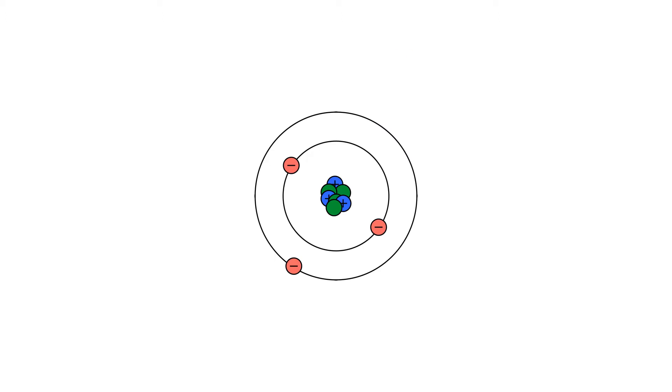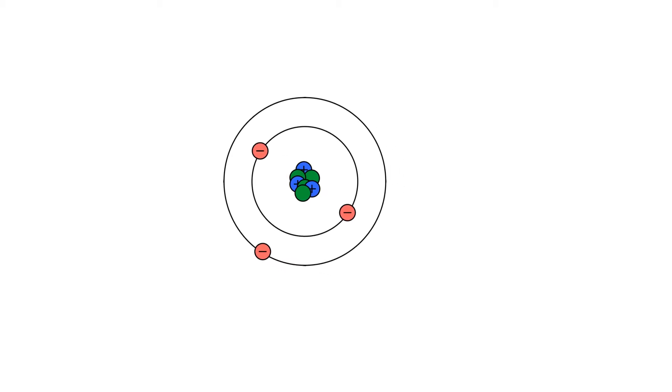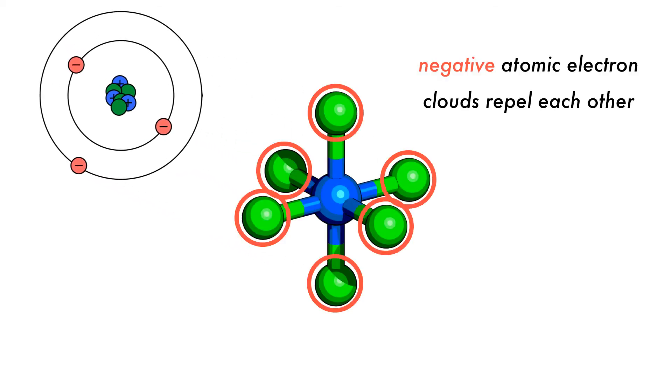From atomic theory, we know that each atom contains a nucleus that is surrounded by an electron cloud. These negatively charged electron clouds repel each other and cause the molecule to adopt a geometry with the atoms as far apart from each other as possible.